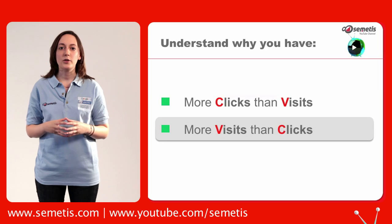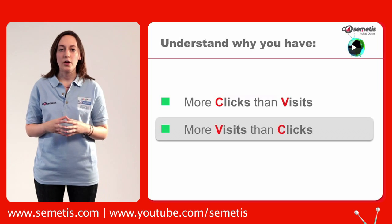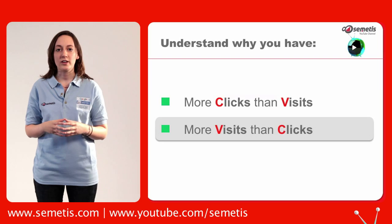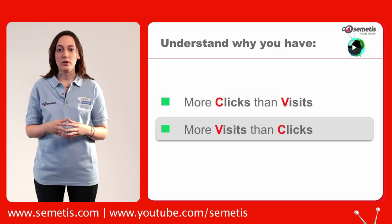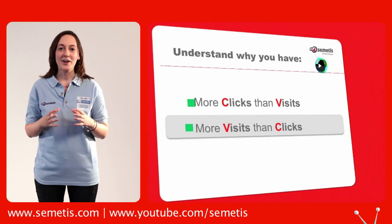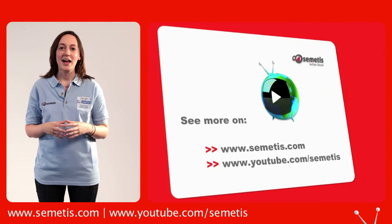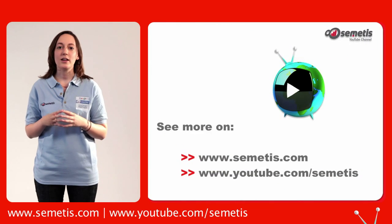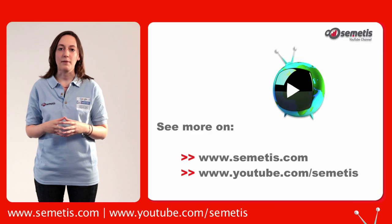Finally, it can be that a user clicks on an ad during a session and returns to your website during a different session using a different medium. This will result in one click but two visits. I hope this tutorial helps you make the distinction between clicks and visits and better interpret your data. For more, subscribe to Semity's YouTube channel. Thank you.